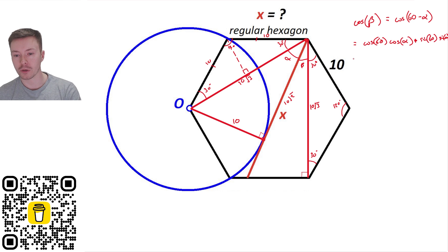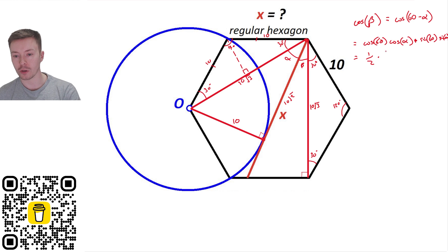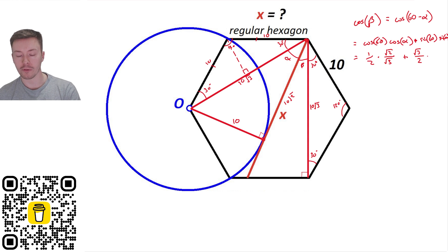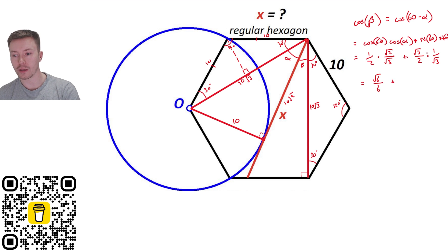So: cos 60 is 1/2. Cos alpha is adjacent over hypotenuse = 10√2 / 10√3, the tens cancel giving √2/√3. Sin 60 is √3/2. Sin alpha is opposite over hypotenuse = 10 / 10√3, simplifying to 1/√3. Multiplying: the left term gives √6/6, the right term simplifies to 1/2. Combining gives (3 + √6) / 6.